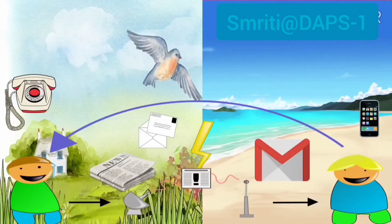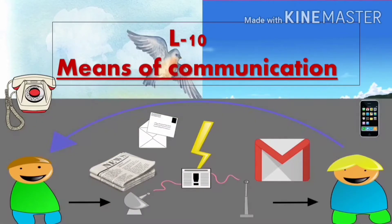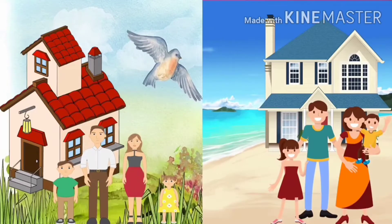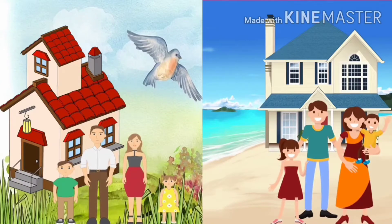Welcome back children. As you all know, we are doing Lesson 10: Means of Communication. We live in a society, and to be happy and to do our work properly, we need to talk to each other. If we don't talk to anyone, we will be bored and unhappy. And without talking, we will not be able to do our work. So children, how do we communicate with our near and dear ones? Let's understand with an example.